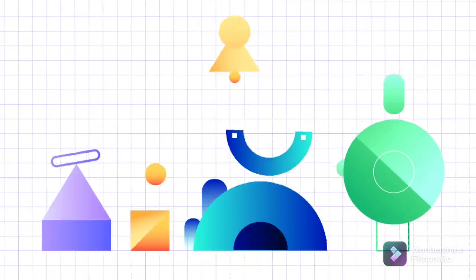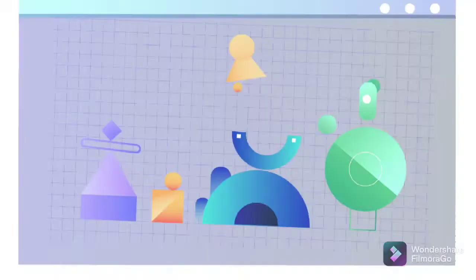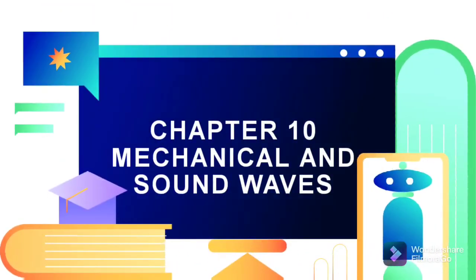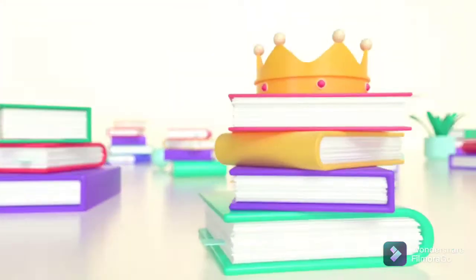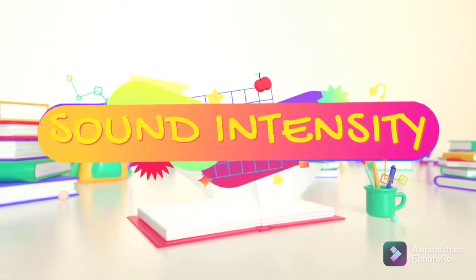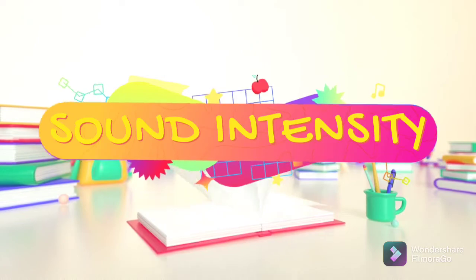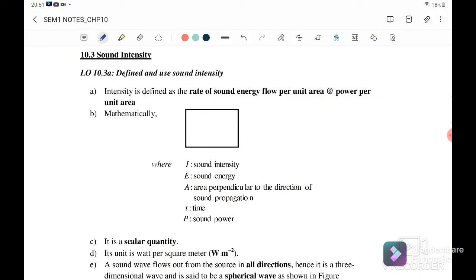Hello, welcome back to my channel. Today we are going to discuss Chapter 10: Mechanical and Sound Waves. In this video, we are going to discuss subtopic 10.3: Sound Intensity. So what is the meaning of sound intensity? Intensity is defined as the rate of sound energy flow per unit area, or power per unit area.